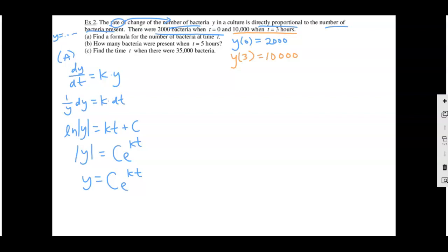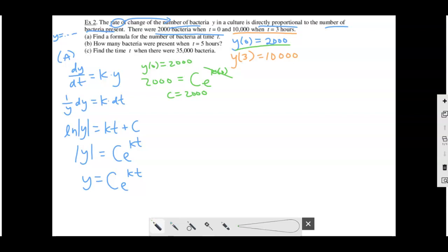Use the first condition: y(0) equals 2,000. So 2,000 equals C·e^(k times 0). Since k times zero is zero and e to the zero is 1, that tells me C equals 2,000. Use this condition first because k times zero eliminates k immediately. Now update the function: y equals 2,000·e^(kt), and then use the second piece of information to solve for k.